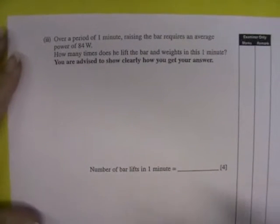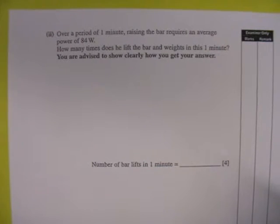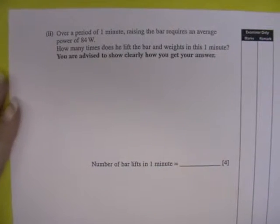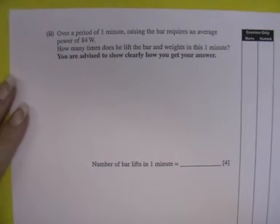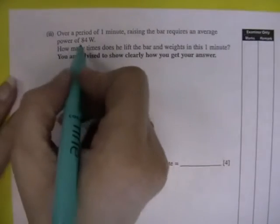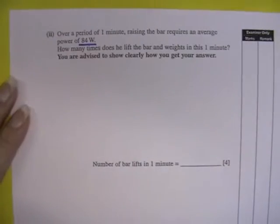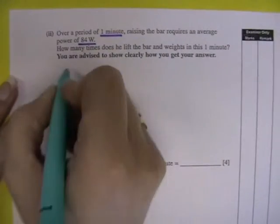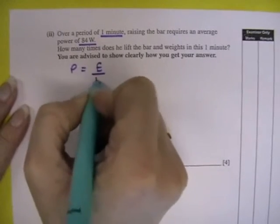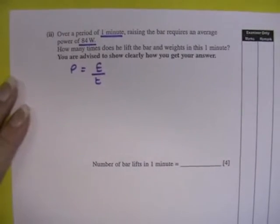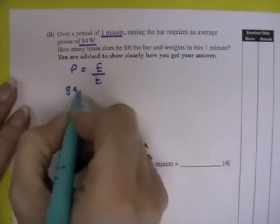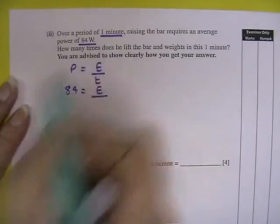Over a period of one minute, raising the bar requires an average power of 84 watts. How many times does he lift the bar and weights in this one minute? Now there are several different approaches to this question and I am going to show you all of them. So the first one would be identifying the fact that now we are interested in power. The equation that links power and time is P equals E over T, where T is the time.